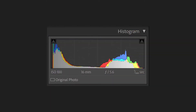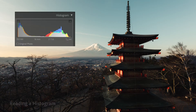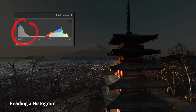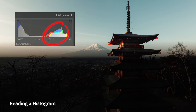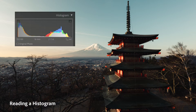So how exactly do you read a histogram and how is it useful? The horizontal axis starts with blacks on the far left, moves to shadows, mid-tones, highlights, and the pure whites of your image. In this example, there's a lot of data on the left side — the shadow side — and also on the mid-tones and highlights. This represents the image: the bottom half is trees and a pagoda which are dark, and the top is the sky and Mount Fuji which are the bright parts. Also notice how the graph never touches the far left or far right side — we'll talk about this later.